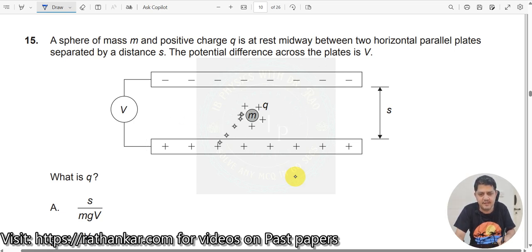This potential difference is V. What is Q? He's asked us. Now this is levitating here, it's just levitating. How can something levitate? It can levitate only when the two forces acting on it sum to zero.